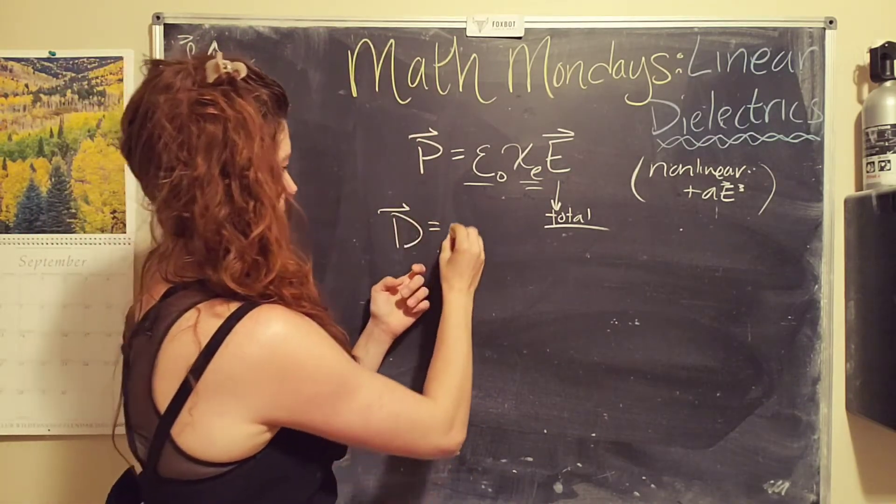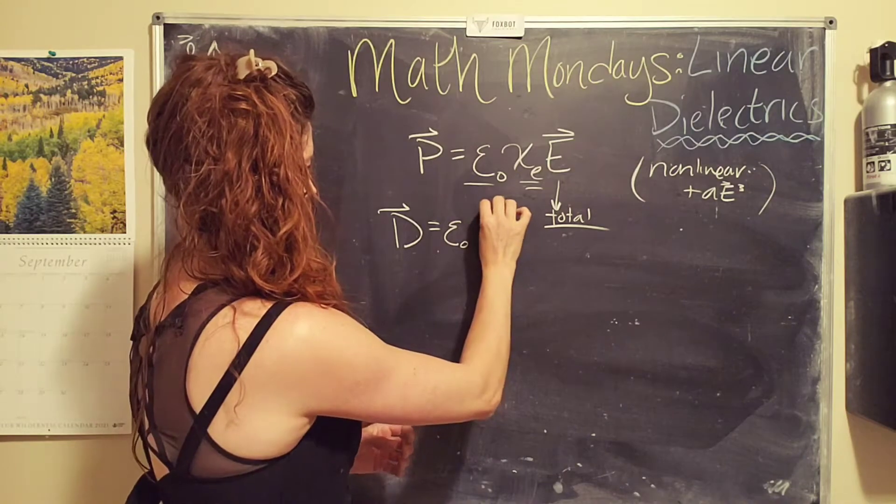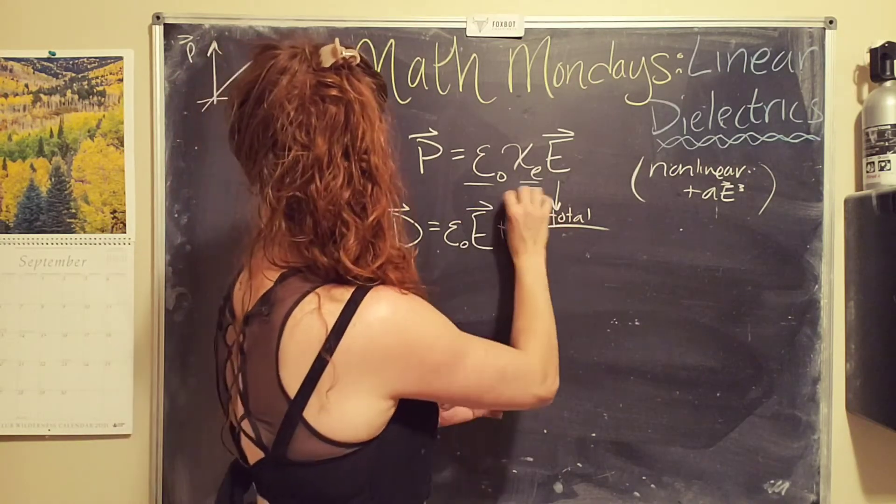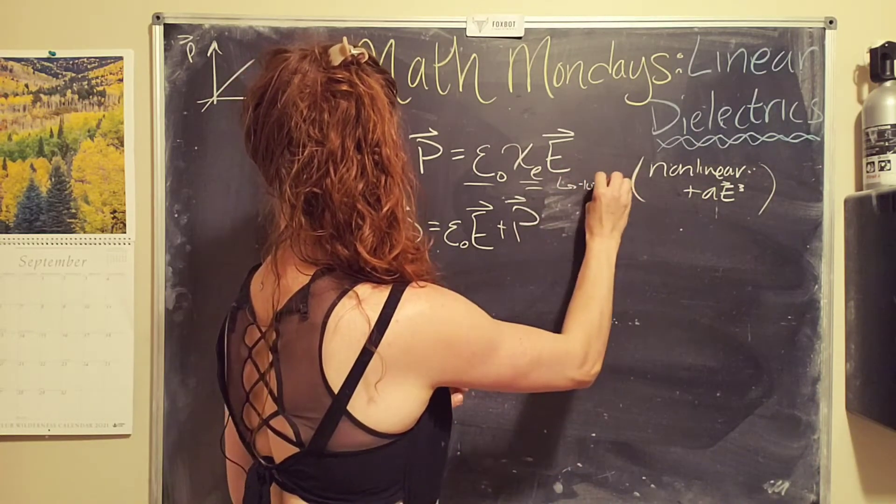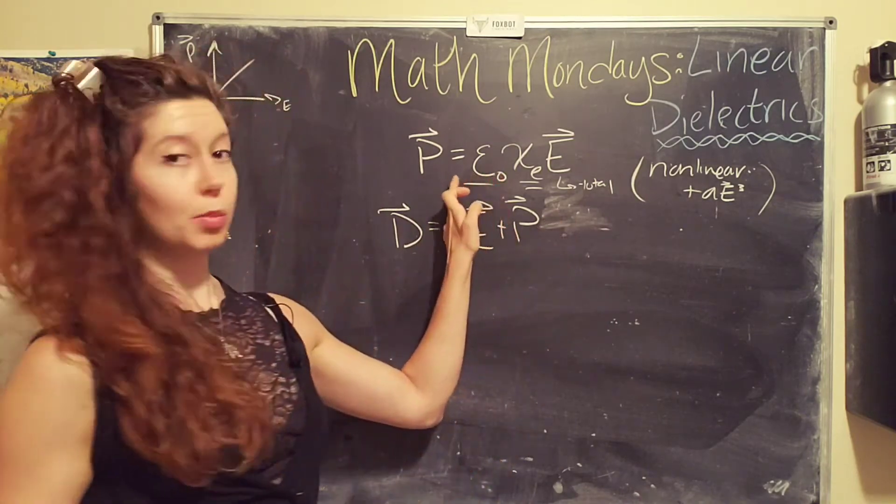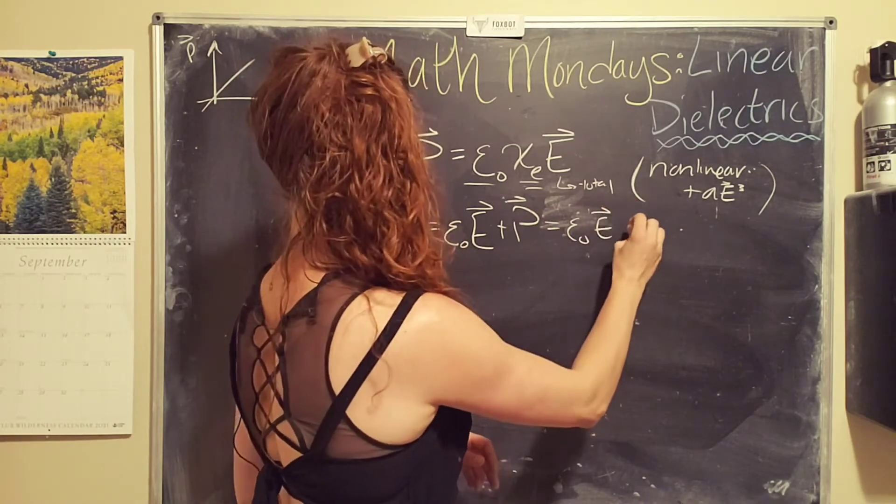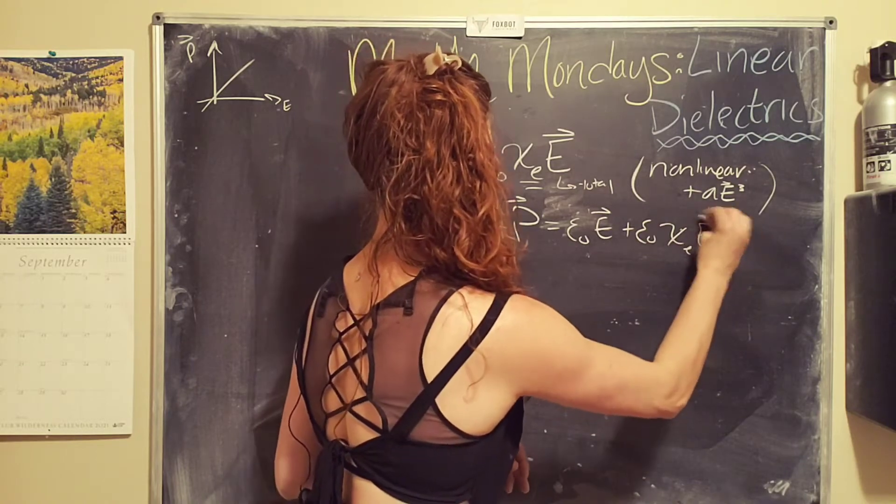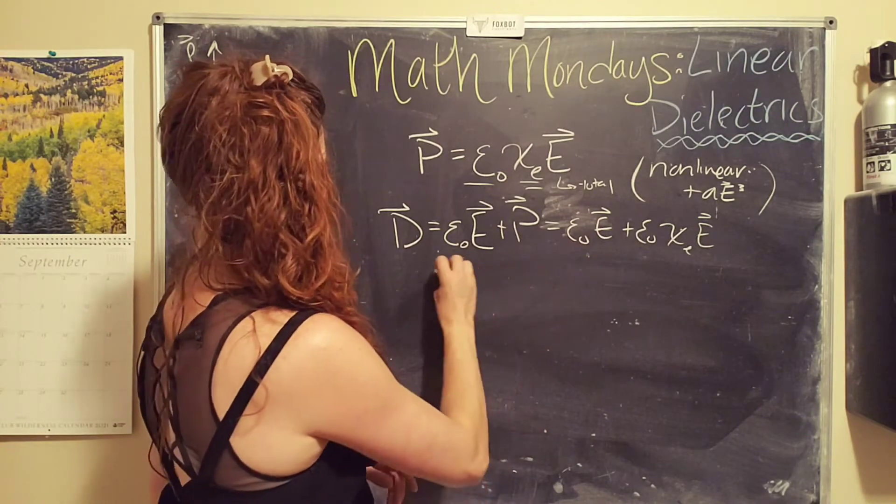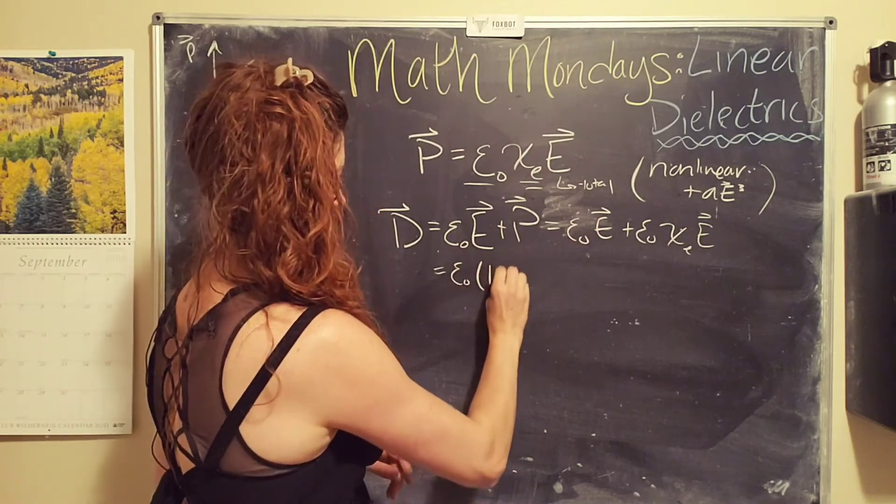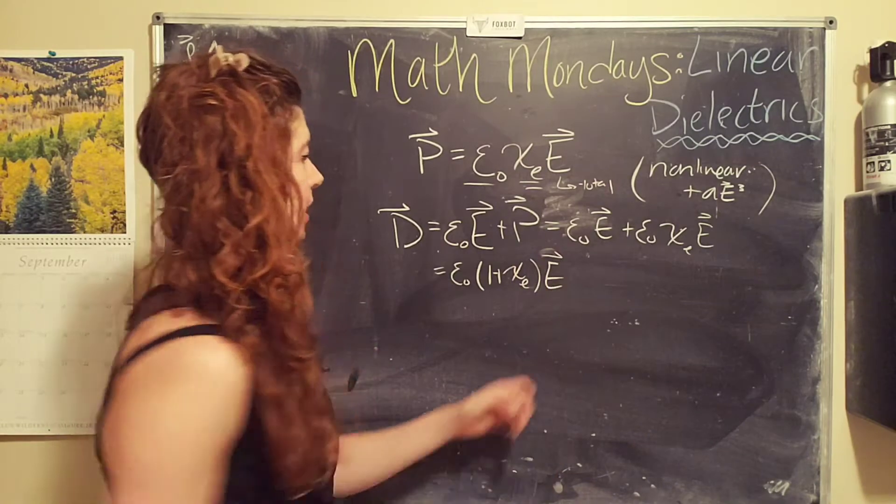Okay, so the displacement is defined or equal to the vacuum permittivity times the electric field plus the polarization. Oh no, I'm running in, we'll just say total over here. And so let's replace the polarization with this equation. So epsilon-naught times the total electric field plus epsilon-naught, the susceptibility times the electric field. Ooh, and we're going to simplify our equation. So we can pull out epsilon-naught. We can also pull out E epsilon-naught one plus the susceptibility times the electric field. That's a half arrow because it's a vector.